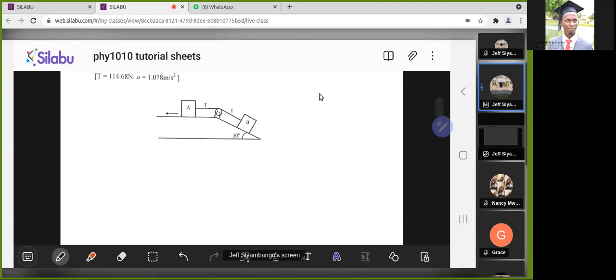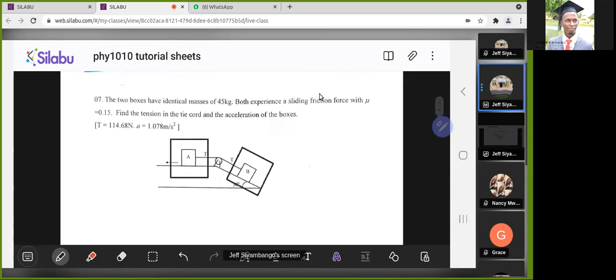Now, how do you work out something like this? Approach this question in parts. Isolate this object and analyze what is happening to it on its own. Then after that, isolate this object and look at it on its own. Since these two boxes are connected, they will have the same acceleration. And the question is telling us that they are accelerating in this direction according to this arrow.